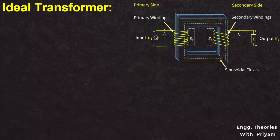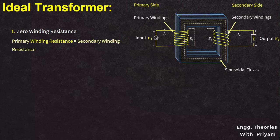In the case of an ideal transformer, it gives output power exactly equal to the input power. Now let's see some characteristics of the ideal transformer. The first characteristic is zero winding resistance. The resistance of both the primary and secondary windings of an ideal transformer is zero — that is, both coils are purely inductive in nature and have no resistive value.